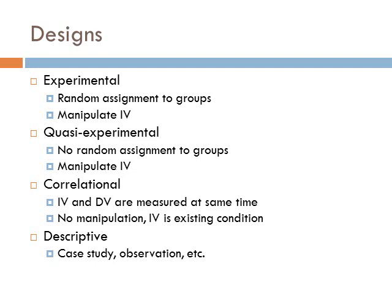The third type of design I have up here is correlational. Correlational designs, the independent variable and the dependent variable are measured at the same time. And we're not manipulating the independent variable. It's usually an existing condition. So we try and then establish a relationship between the two.